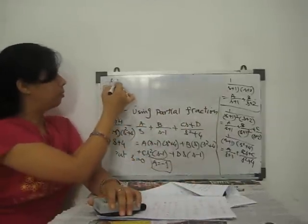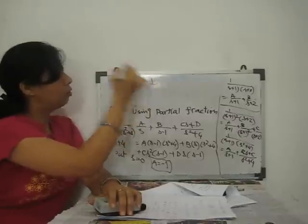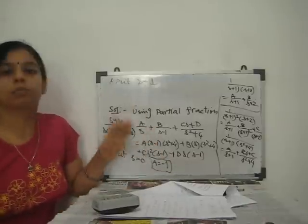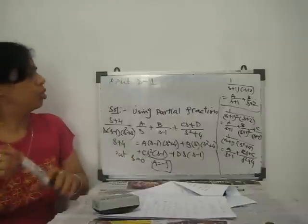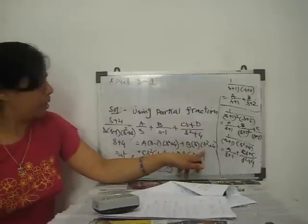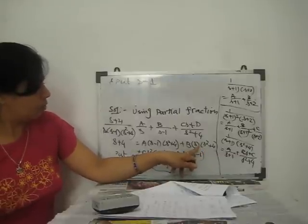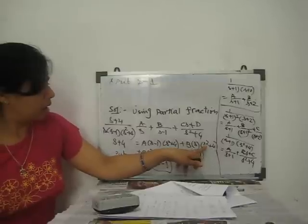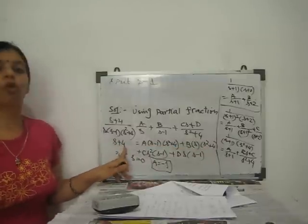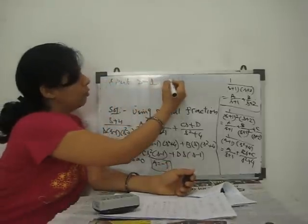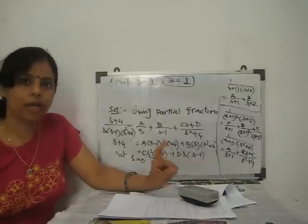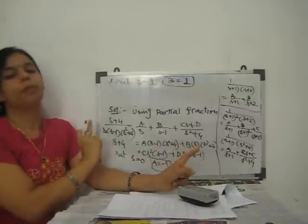Next, put s = 1: the factor (s−1) becomes 0, so A, C, and D terms vanish, and only B contributes. Substituting s = 1: the numerator gives 1+4 = 5, and the remaining factor gives 1×(1+4) = 5. So 5B = 5, giving B = 1.